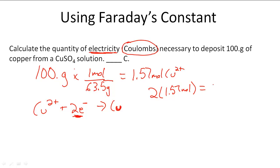And so I'm going to require 3.14 moles of electrons. So we have 1 mole of Cu²⁺, but now we need 3.14 because it's double the number of electrons, double the number of moles of electrons we need to make this reaction happen.